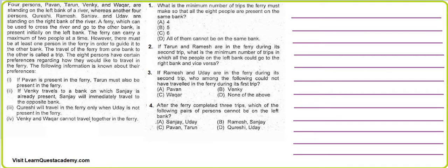Hello everyone. This is a very logical question. The question says there are four people — Pavan, Tarun, Venki, and Vakar — standing on the left bank of a river, whereas another four people — Q, R, S, and U — are standing on the right side of the bank.